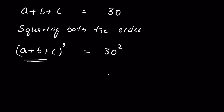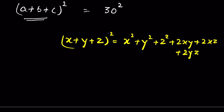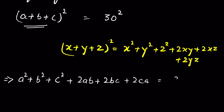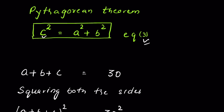This is an algebraic expression. If we have x plus y plus z whole square, then this equals x squared plus y squared plus z squared plus 2xy plus 2xz plus 2yz. Using this formula to expand: a squared plus b squared plus c squared plus 2ab plus 2bc plus 2ca equals 900.